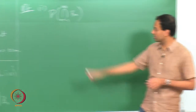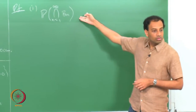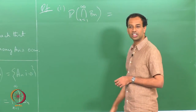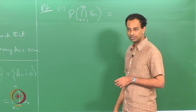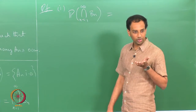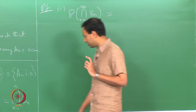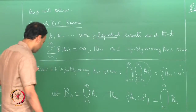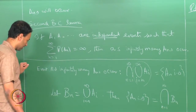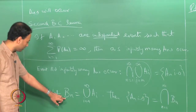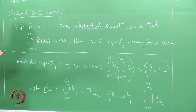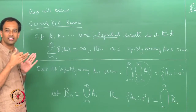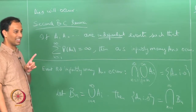We want to show this probability is equal to 0, and when I see something like this the first thing I do is invoke continuity of probabilities. The B_n's will turn out to be nested decreasing: B_n is the event that at least one of A_n, A_{n+1}, etcetera occurs, so B_{n+1} is nested decreasing.